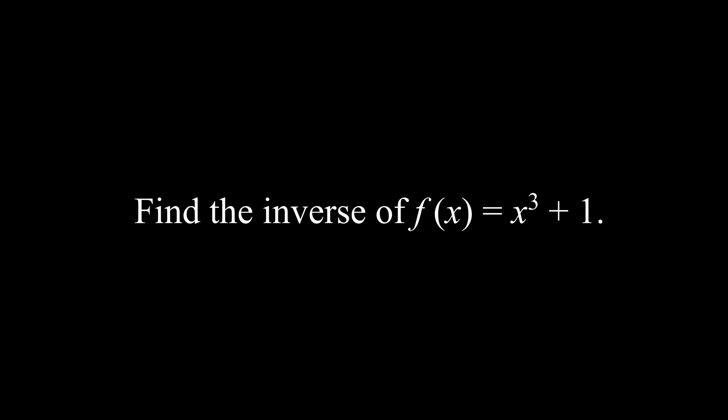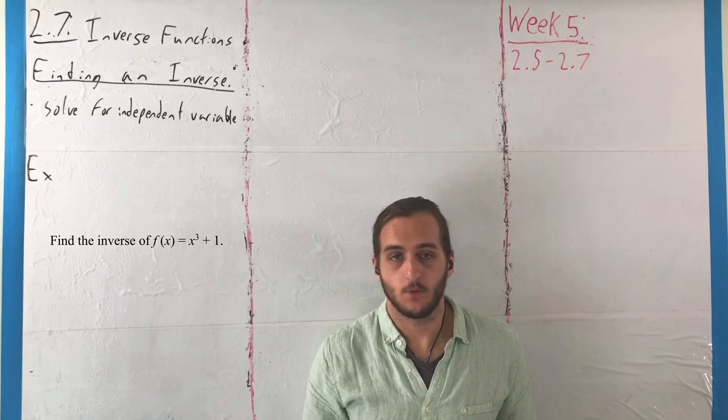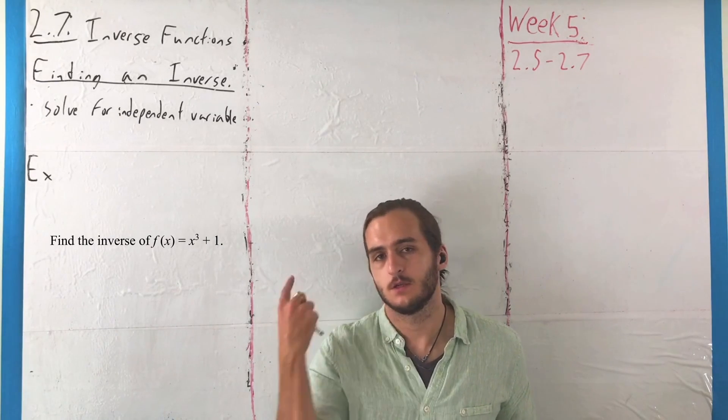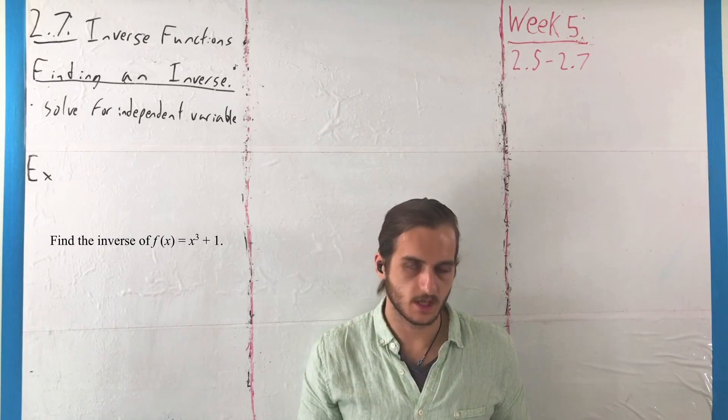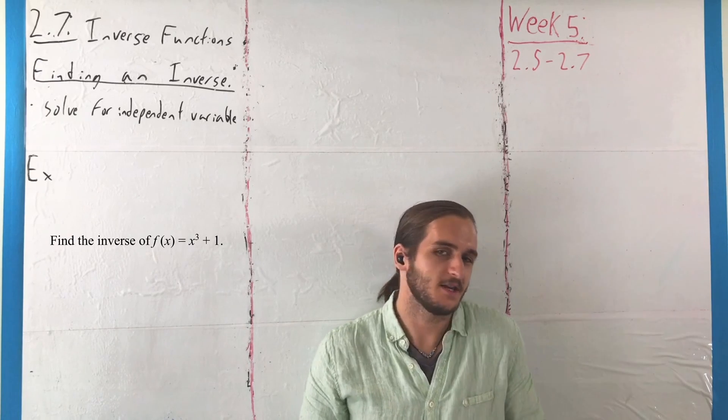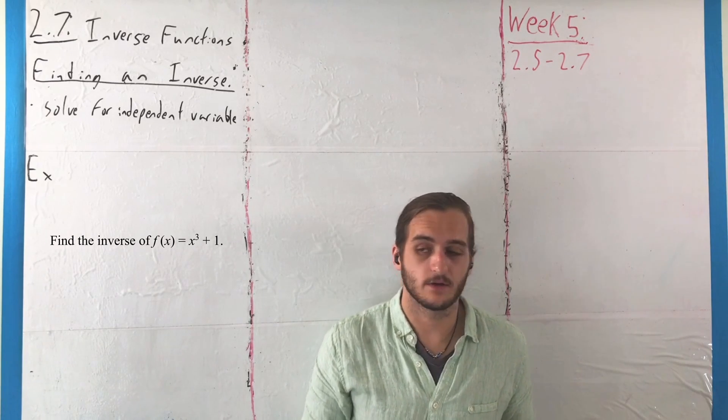So here we want to find the inverse of f of x equals x cubed minus 1. And if you want to know how the book says you should do this, read the book. This is actually one of the examples directly from there. I'll take examples directly from the book every now and then, especially if they have nice graphics.